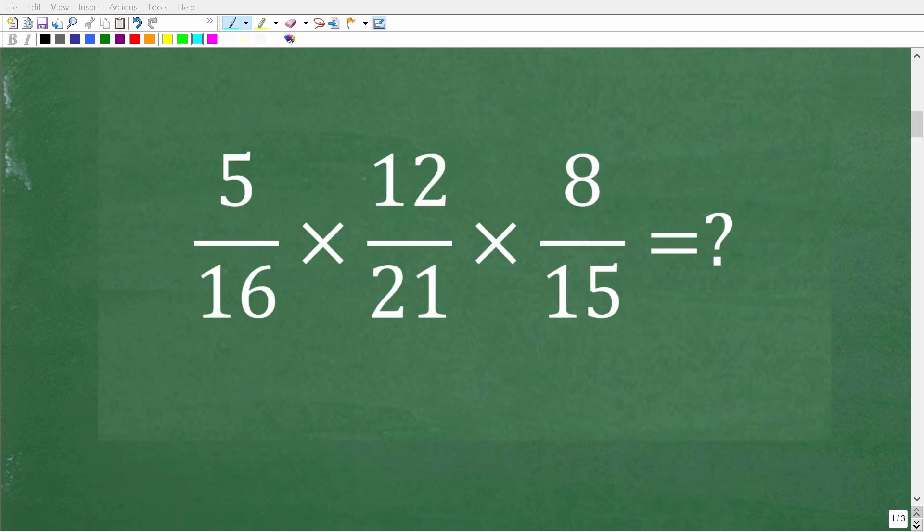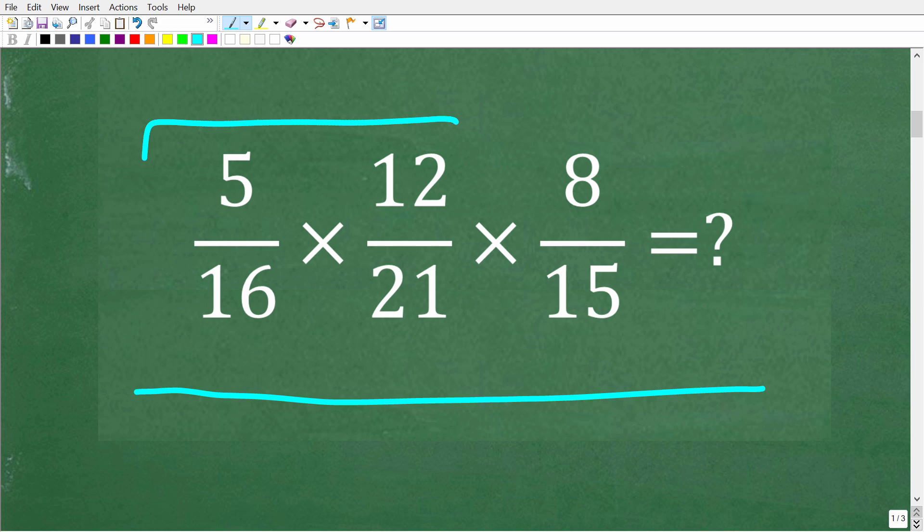So the first thing that we need to understand to solve this problem is how to multiply fractions. Let's take a look at these two fractions right here. The top number in a fraction is called the numerator and the bottom number is called the denominator. If we wanted to multiply these two fractions, all we have to do is multiply the respective numerators and denominators. So this is very easy.